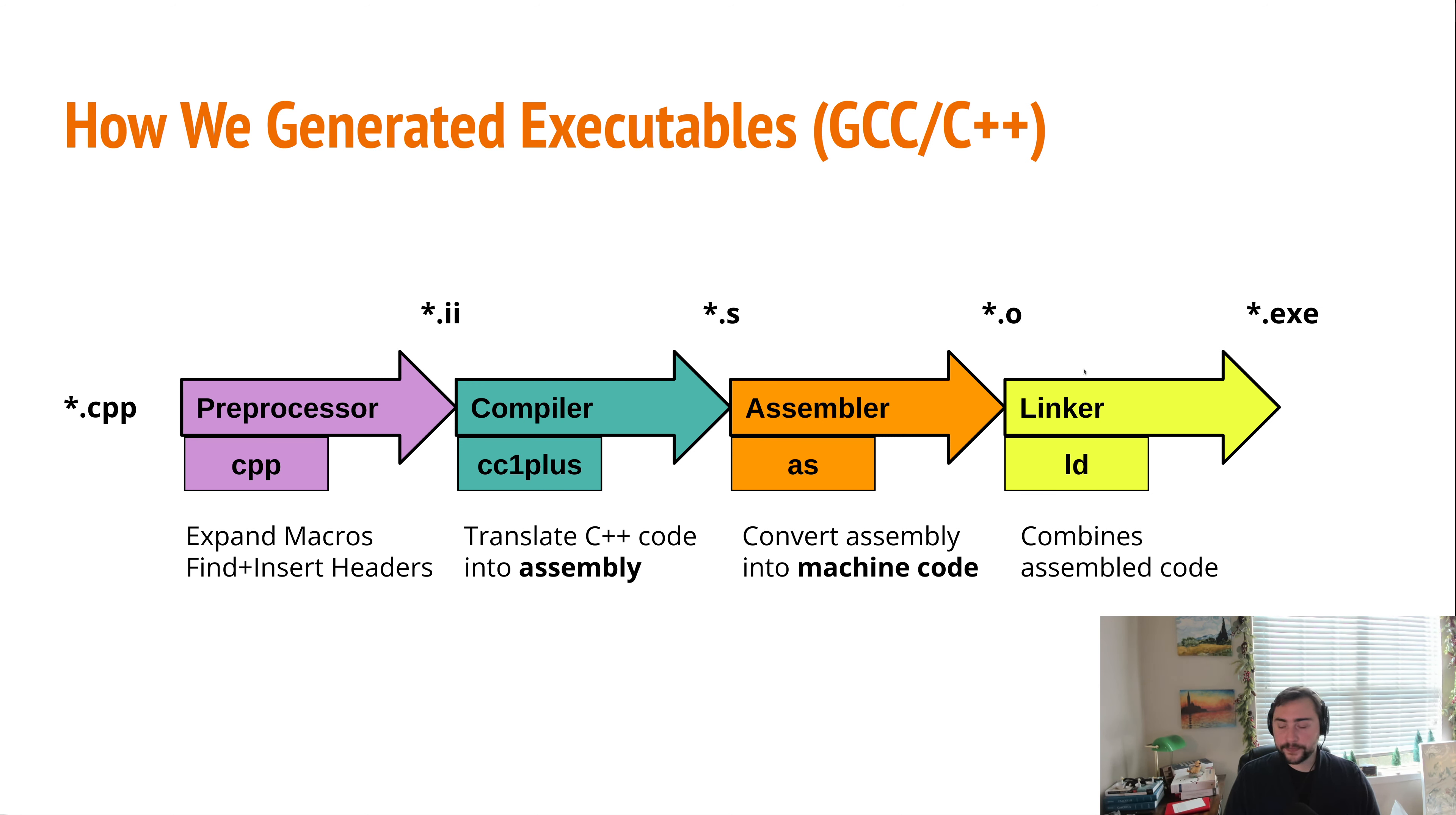And from there, we use a linker. So we pass all of this object code and these object files to our linker, usually something like LD. And what the linker does is it combines all of this assembled code. And from there, we have our executable. So that's the basic process of how we get from a piece of C++ all the way to an executable.